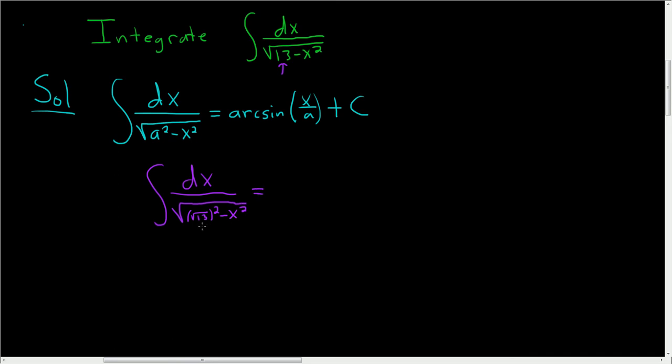And now we'll just use the formula. Our a in this problem is the square root of 13. So this is the arc sine of x divided by the square root of 13, that's our a, plus our arbitrary constant c.